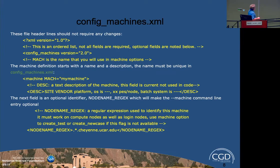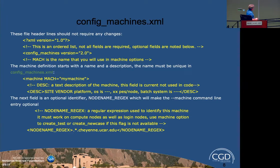The config machines file is an XML file. You give your machine a name — it doesn't have to correspond to any name the machine already has, though usually you do want it to match to avoid confusion. You can add a description; that's an optional field. The node name regex field can be used to automatically identify the machine so you don't need the machine option in create_newcase — it will just automatically know it's running on that machine.